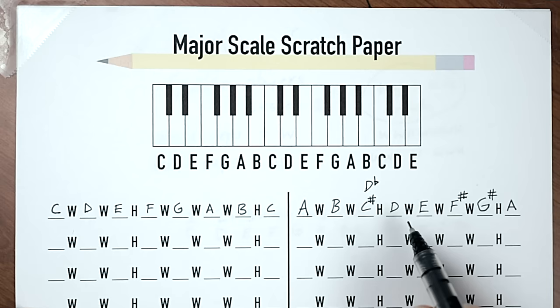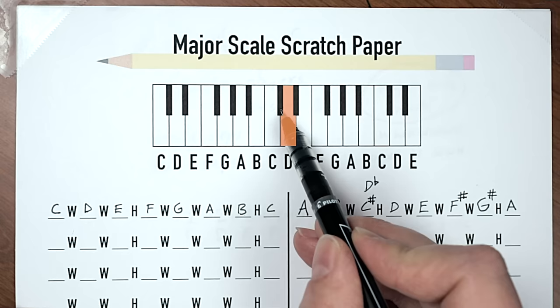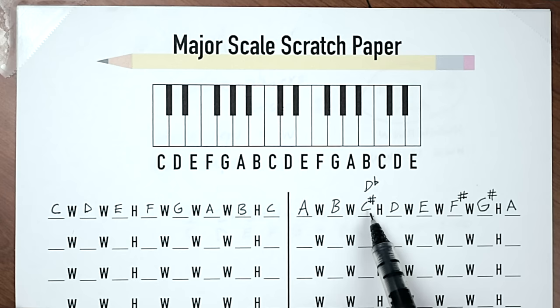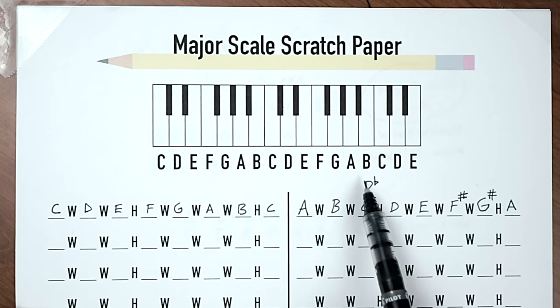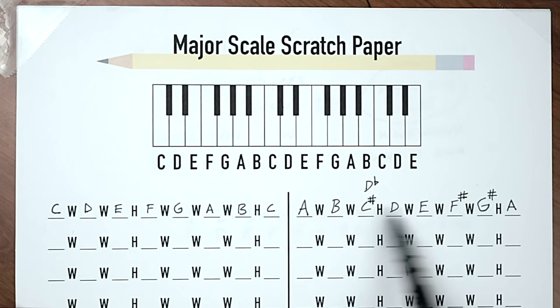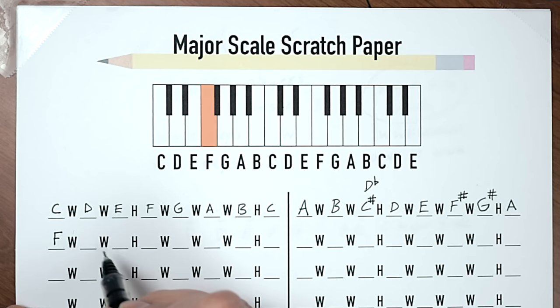C-sharp and D-flat are technically the same note on piano, but they're named differently for a reason. If you tried to make an A scale using D-flat instead of C-sharp, you'd end up with two D's and no C's in the scale. To make a valid major scale, you need a complete in-order alphabet — every letter used exactly once. That's why the distinction between sharps and flats matters.